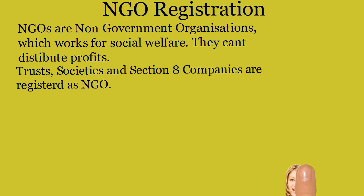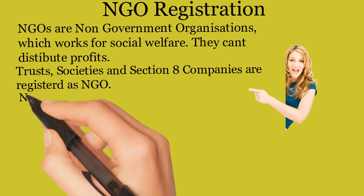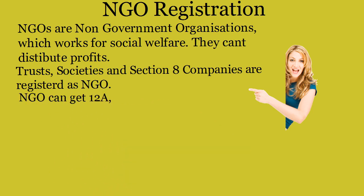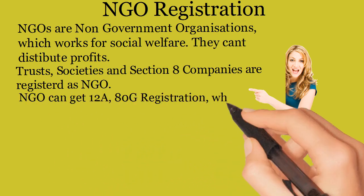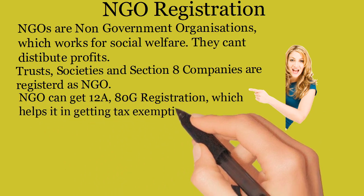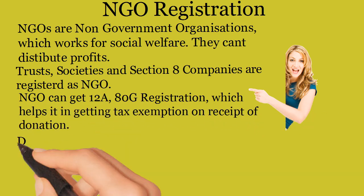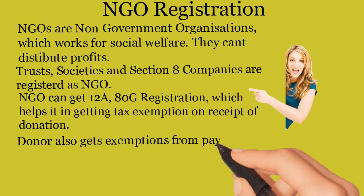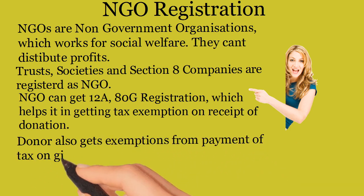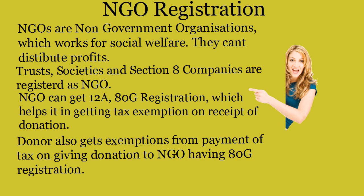Therefore, Trusts, societies, and Section 8 companies can take donations from the public. An NGO can get 12A and 80G registration, which helps it in getting tax exemption on receipt of donations. The donor also gets exemption from payment of tax on giving donations to an NGO having 80G registration.